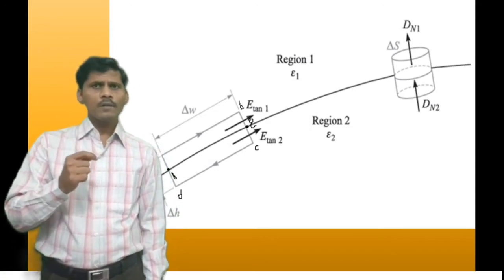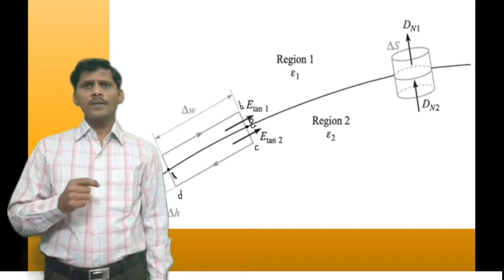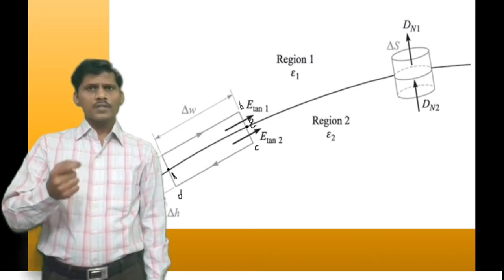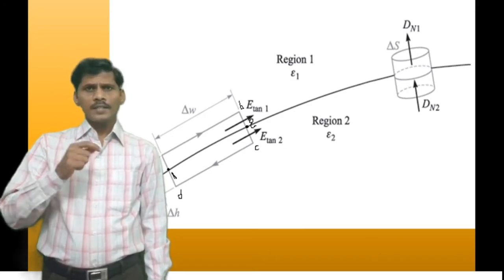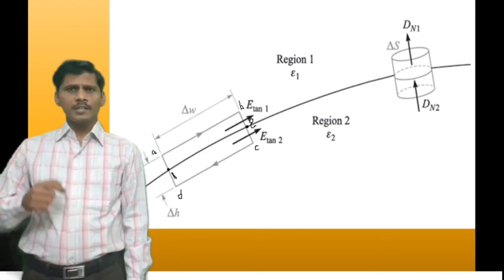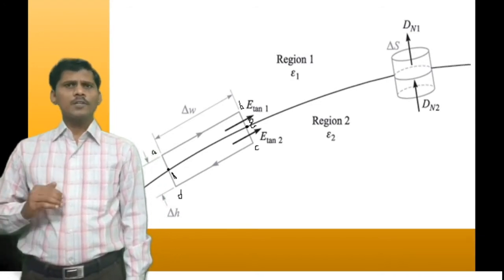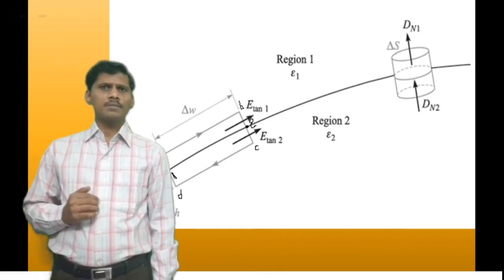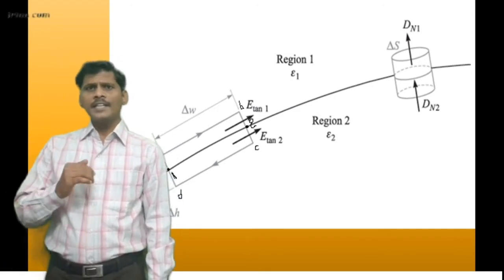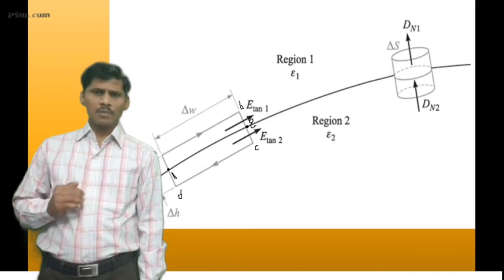In medium 1, the tangential and normal components of the electric flux density are D-tangential-1 and D-normal-1. In medium 2, the tangential and normal components are D-tangential-2 and D-normal-2.